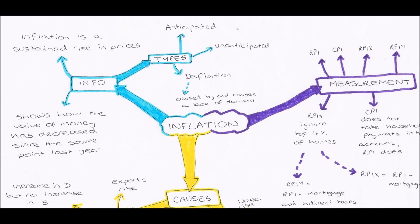Now the RPIX and the RPIY, what are they? Well, the RPIX is the value of the RPI minus mortgage payments. So the RPI does include mortgage payments, but the RPIX doesn't.